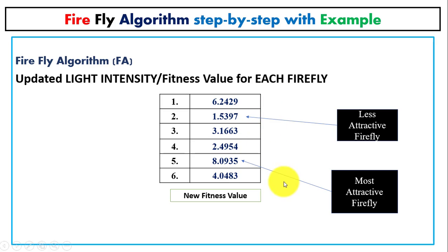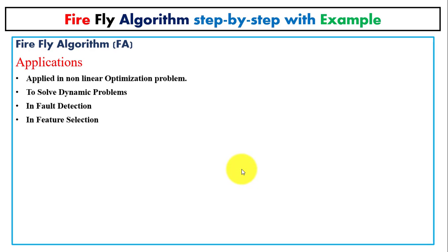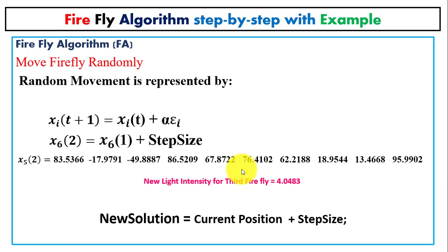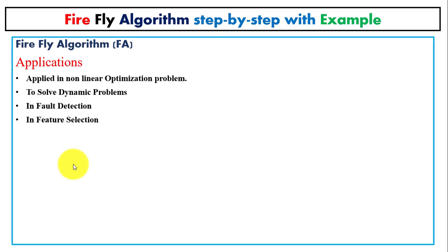After updating all firefly positions, we can see the fitness values computed for all fireflies — some are less attractive and one is most attractive. At the start of the second iteration, we check whether the newly computed positions are within the bounds (between minus 100 and 100). If any value is outside those bounds, we update the values again.